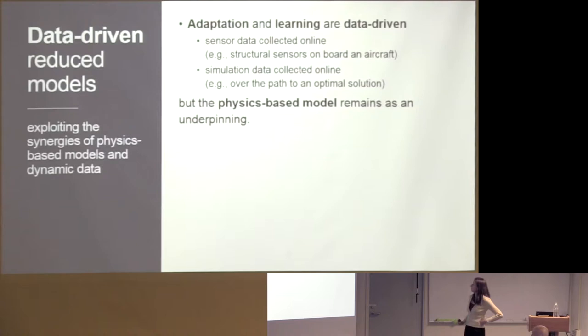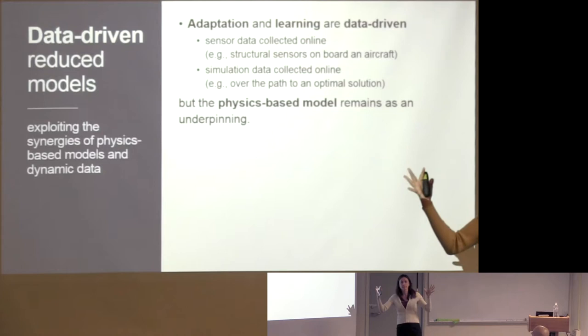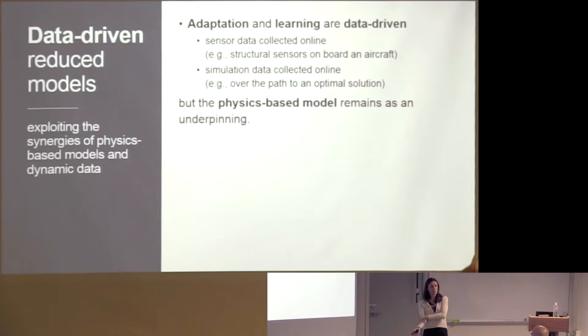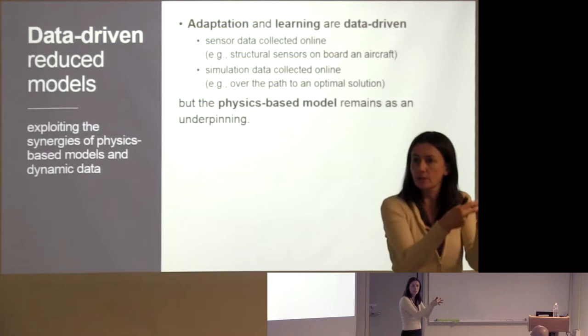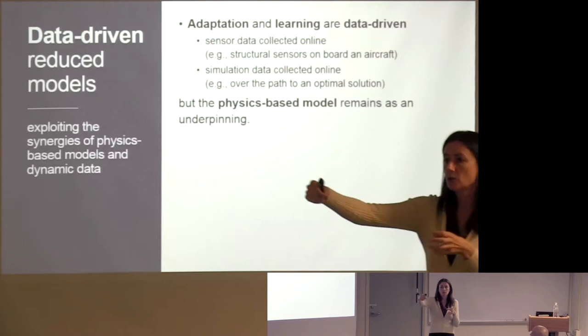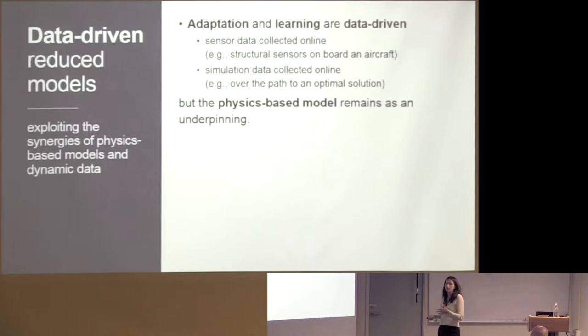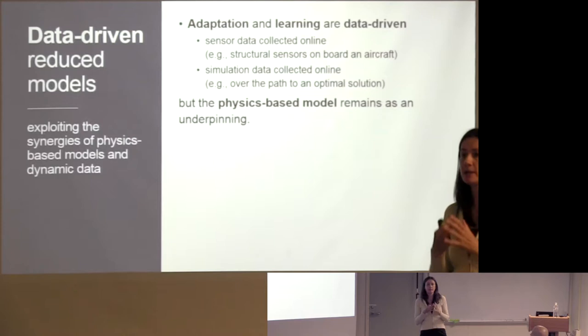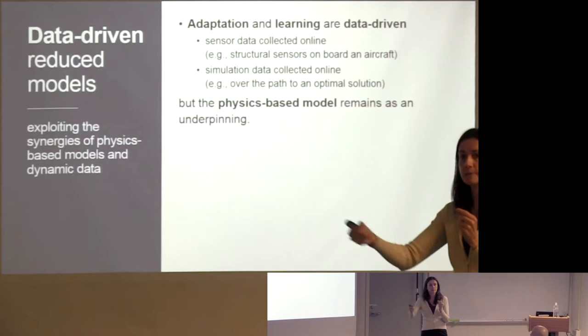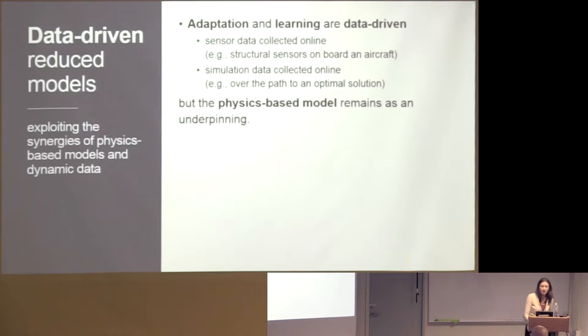This is what we've worked on: data-driven adaptation and learning for reduced models. When I say data, I mean it in the broadest sense — it could be sensor data from structural sensors, or even new simulation data. Imagine you're solving a design optimization problem with a reduced model that's good for the current design space, but as optimization traverses the design space, you're moving further from conditions under which the model was built. There may be useful information from new simulations that could let you update your model — similar to a BFGS update in quasi-Newton methods, using already-computed information to update the Hessian approximation.